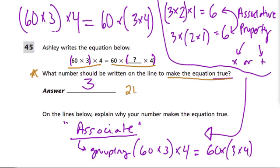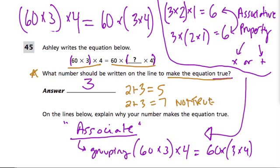For example, let's say I had 2 plus 3. Well, that equals 5, and that's an equality — both sides are equal. Now, if I wrote 2 plus 3 equals 7, that's not true. In other words, 7 is not the same thing as 2 plus 3, so it's not true.